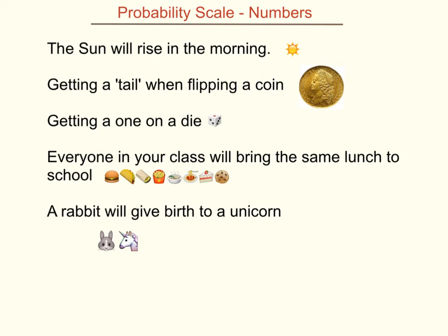The sun will rise in the morning — that's certain to happen, so that's going to be 1.0. Getting a tail when flipping a coin was even chance, so that's a half, or 0.5. Getting a 1 on a dice: there are six numbers and there's only one 1, so it's one chance out of six. There are six to choose from and only one that gives the result we want — the favorable outcome.